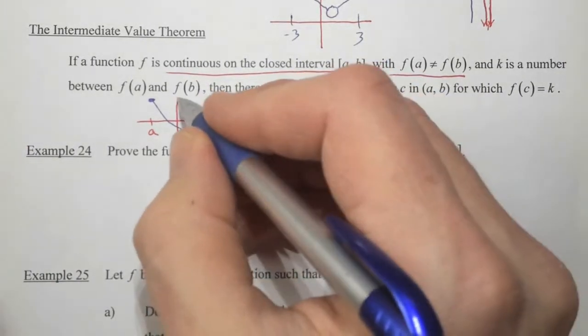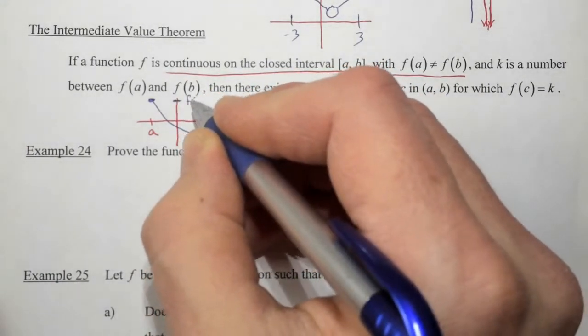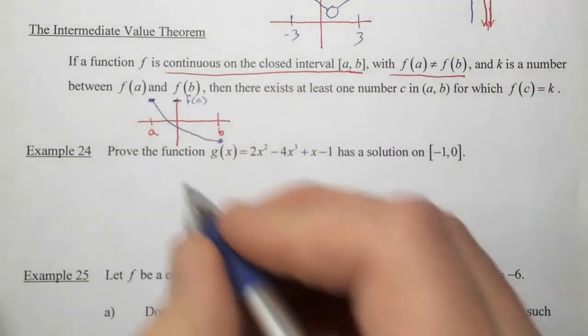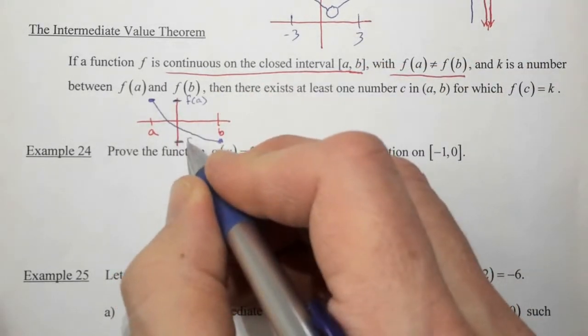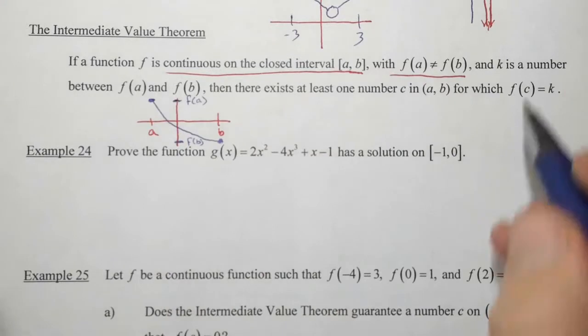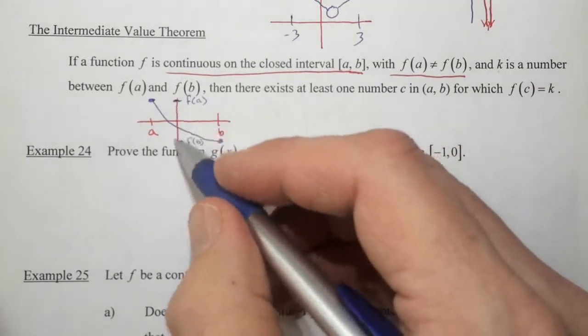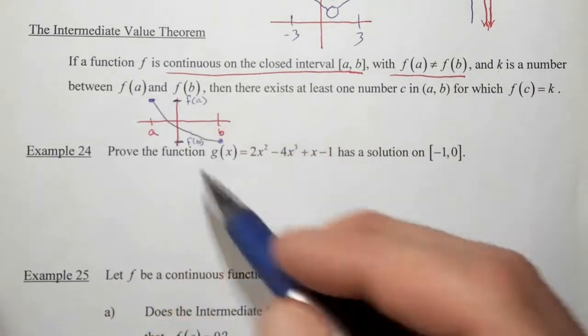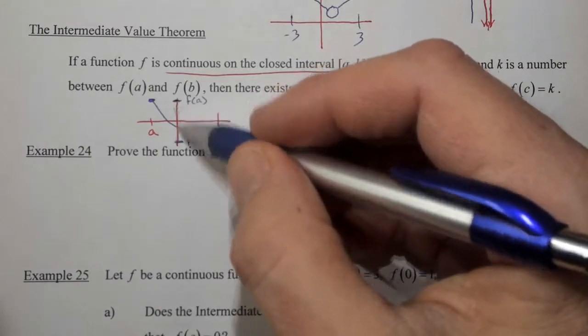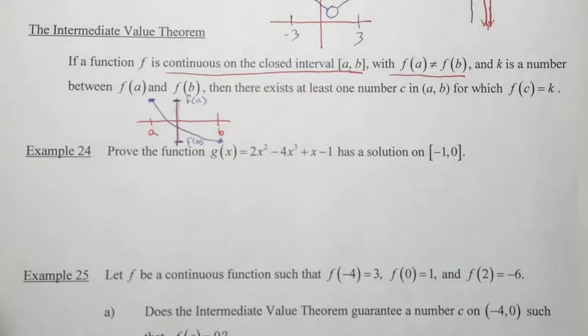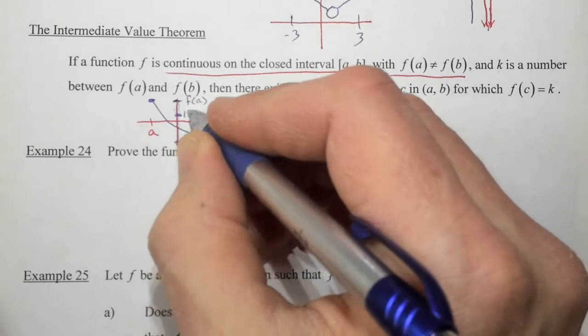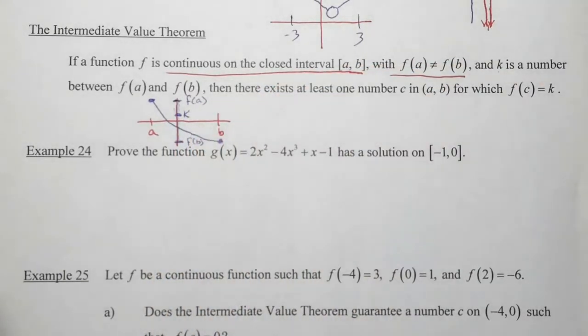So that means that right here at this spot, that is my y value, that's my f of a. And down here, that's my f of b. So k is somewhere in between f of a and f of b. K is somewhere on that section of the y-axis. Let's make it right here. But it could be anywhere in between f of a and f of b.